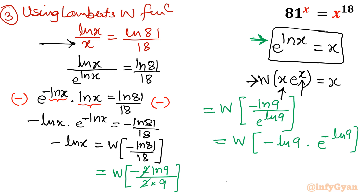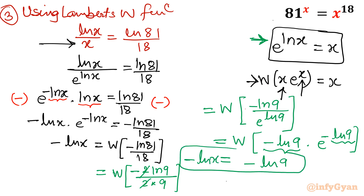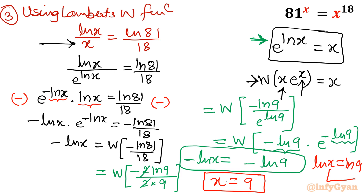This again forms the Lambert W function formula. The coefficient and exponent are the same: minus ln 9 times e to the power minus ln 9. Applying W to both sides, we get minus ln x equal to minus ln 9. Therefore ln x equals ln 9, which means x is equal to 9.